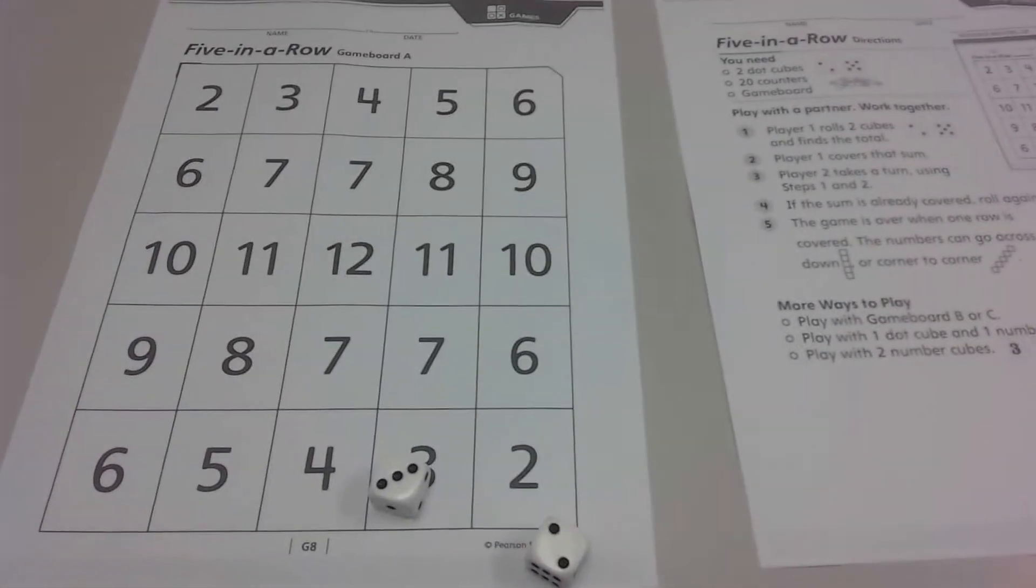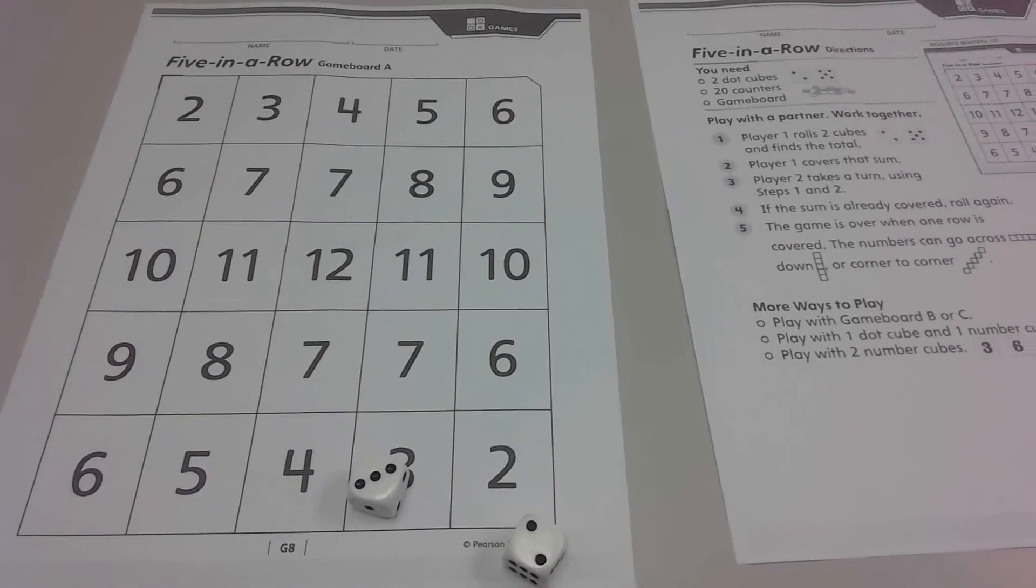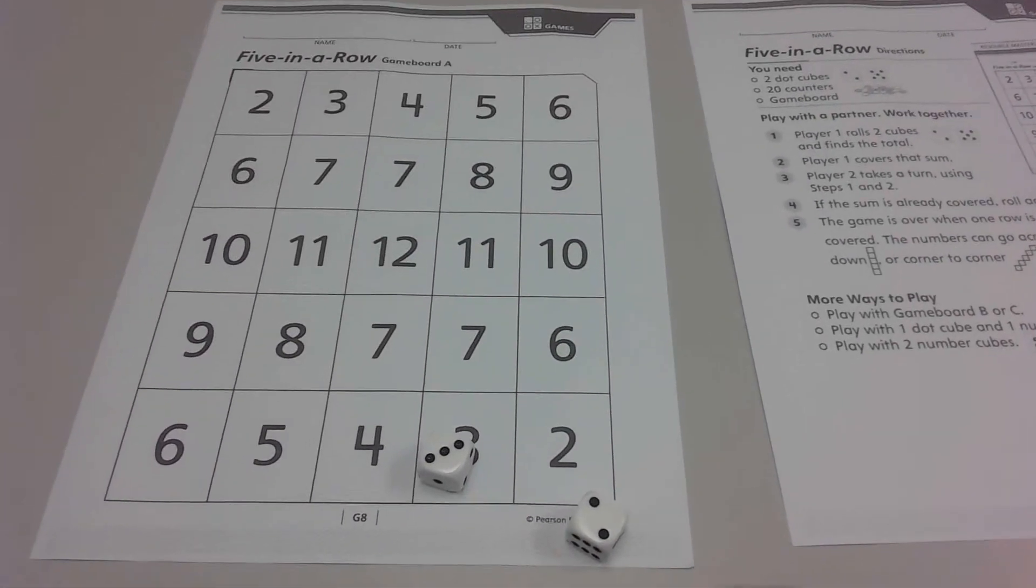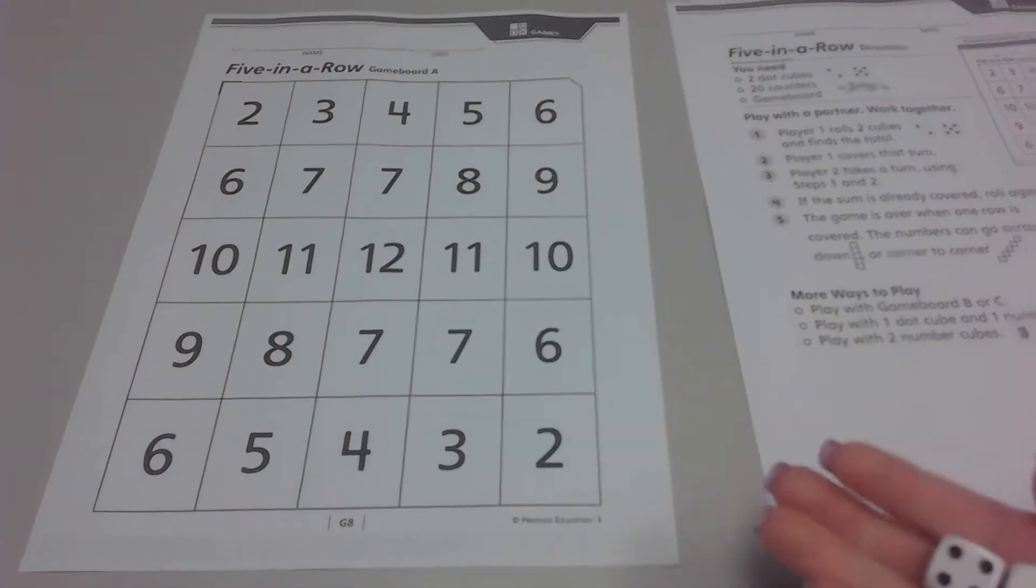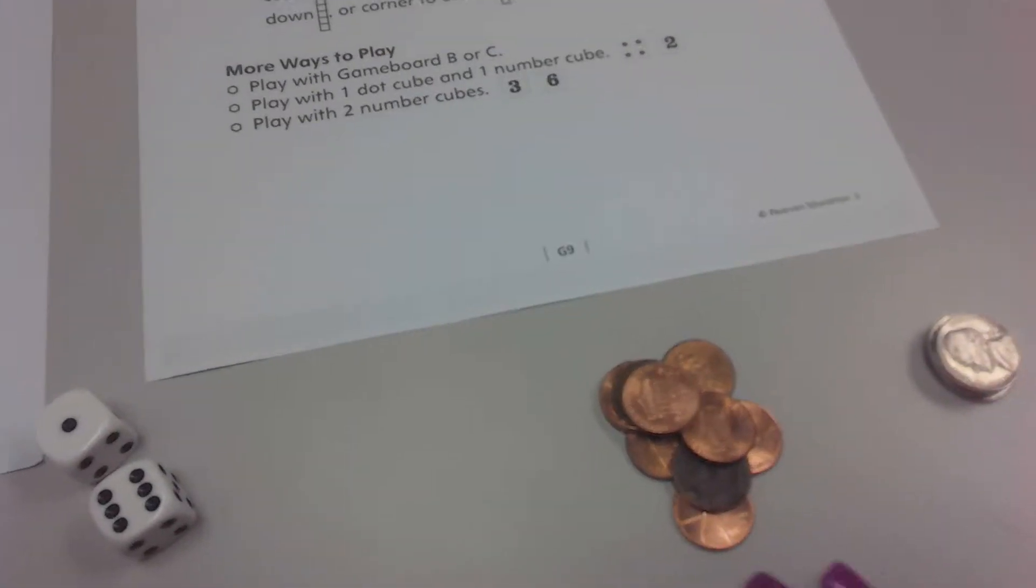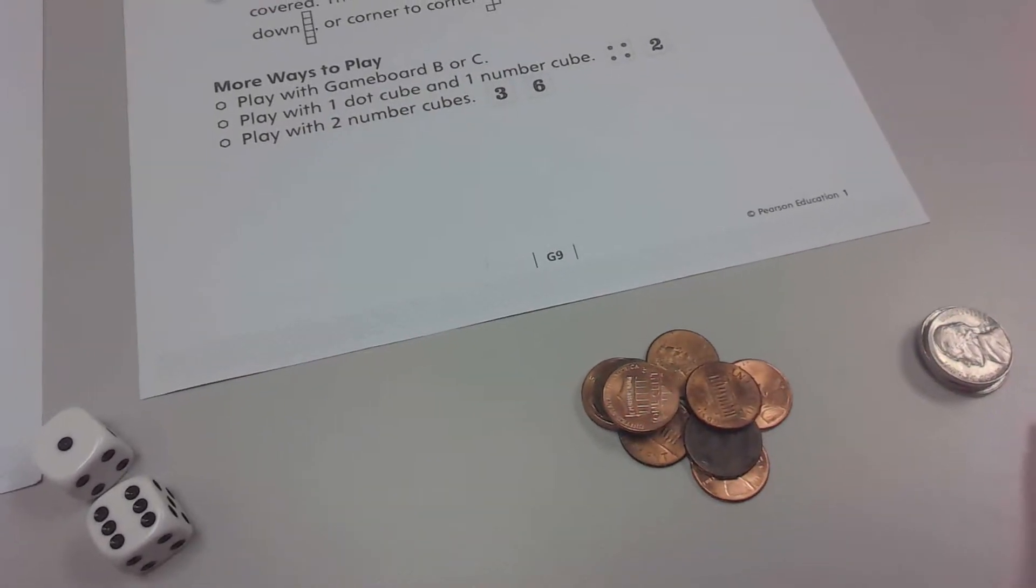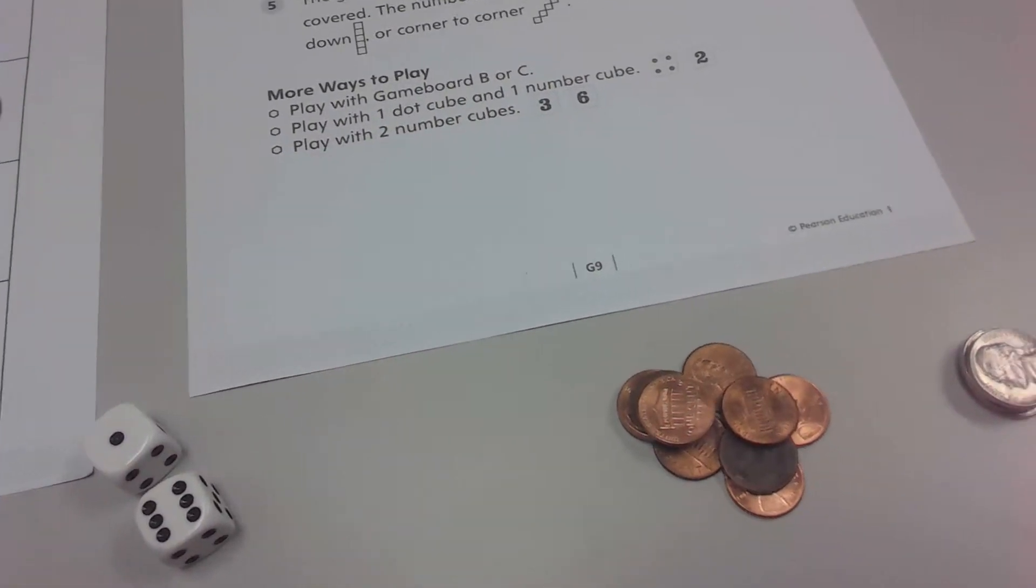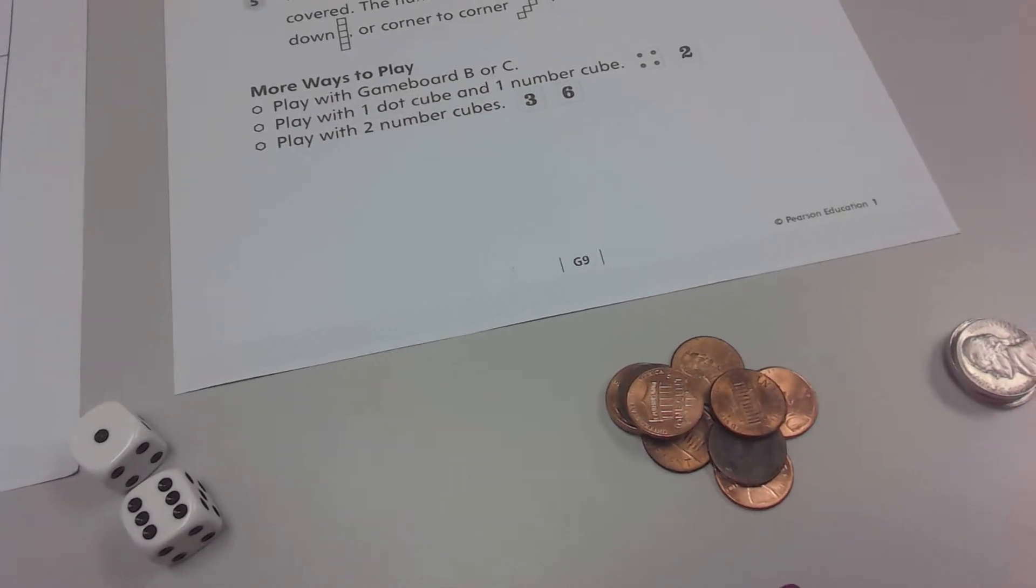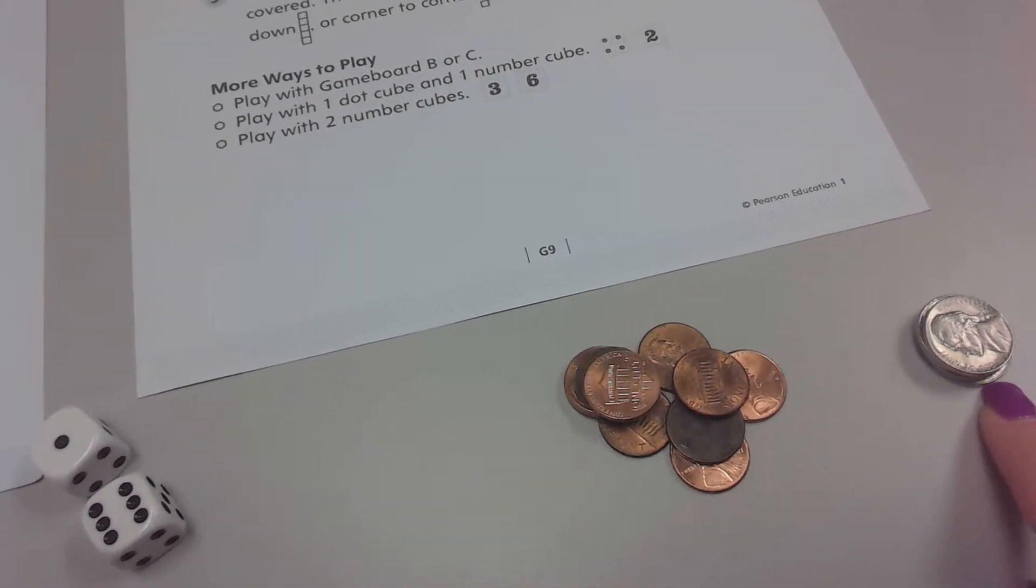All right, here's our game Five in a Row. This is working on our skills of adding numbers together using dice. So you're going to need dice and you're going to need some type of counters. Since you're playing this at home, I chose to use money. So using two different types of coins, which is also going to reiterate one of our standards of using a coin and its value. So using a penny knowing it's one cent, using a nickel knowing it's five cents.